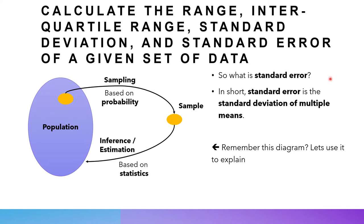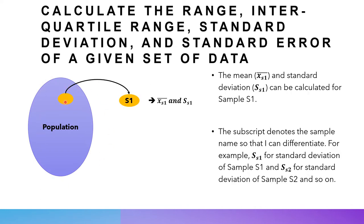Lastly, we come to the item called standard error. Standard error is a little bit more tricky. By definition, standard error is the standard deviation of multiple means. To explain this, let's look at the population-sample diagram. Within a population, I can have one sample — call it S1. From this sample I can calculate the sample mean and the sample standard deviation for S1.